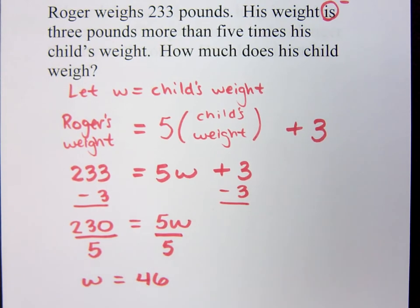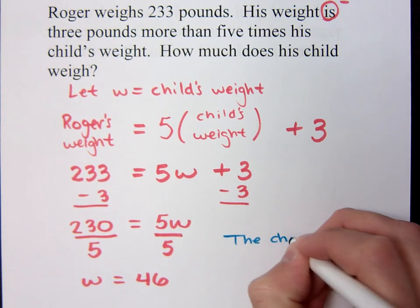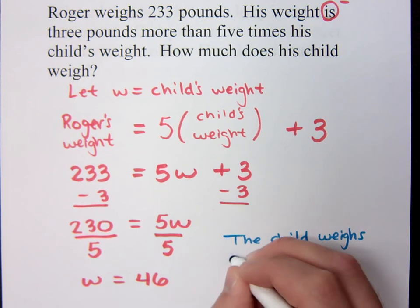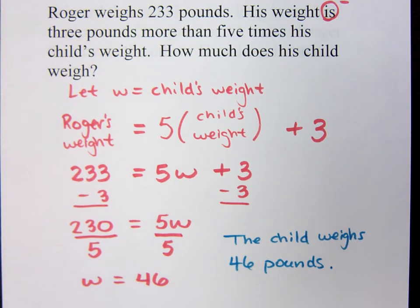Now what does W represent? It's the child's weight. So what we're saying here, I guess in the form of a sentence, is what? We're saying that the child weighs 46 pounds, right? W is the child's weight, and that equals 46. And make sure we understand the units here. We're talking about pounds.